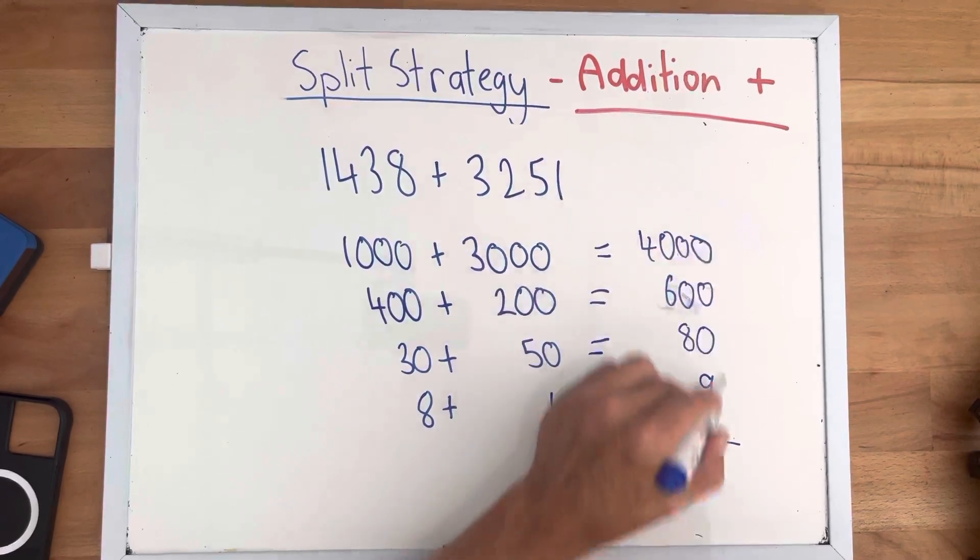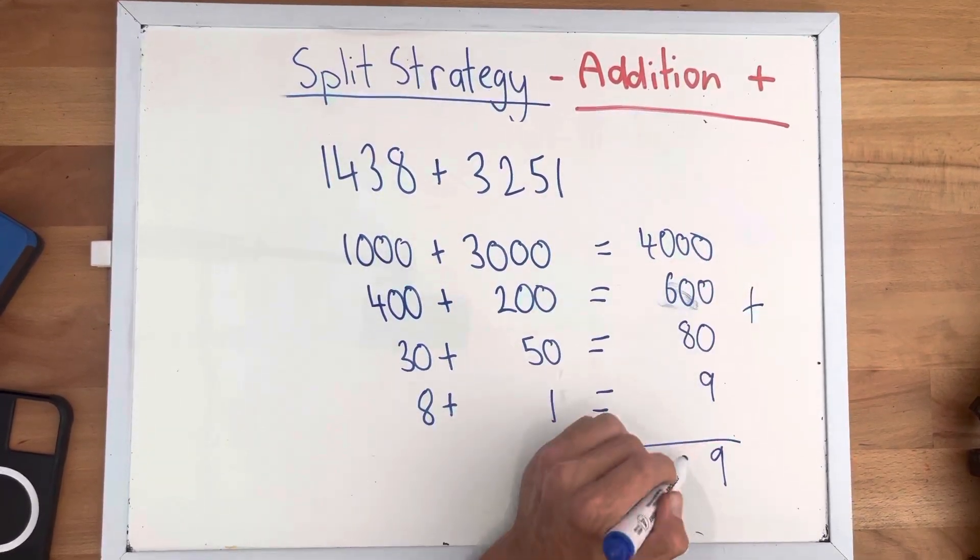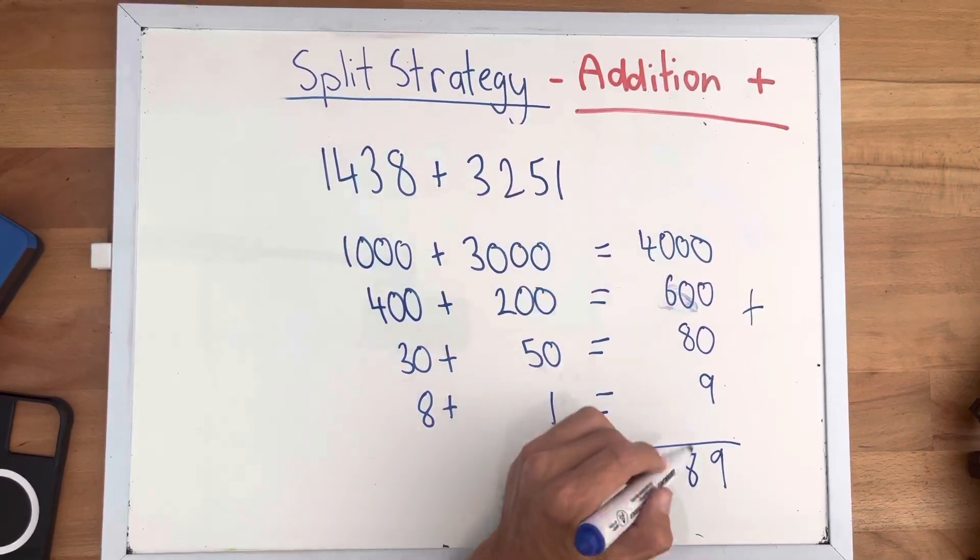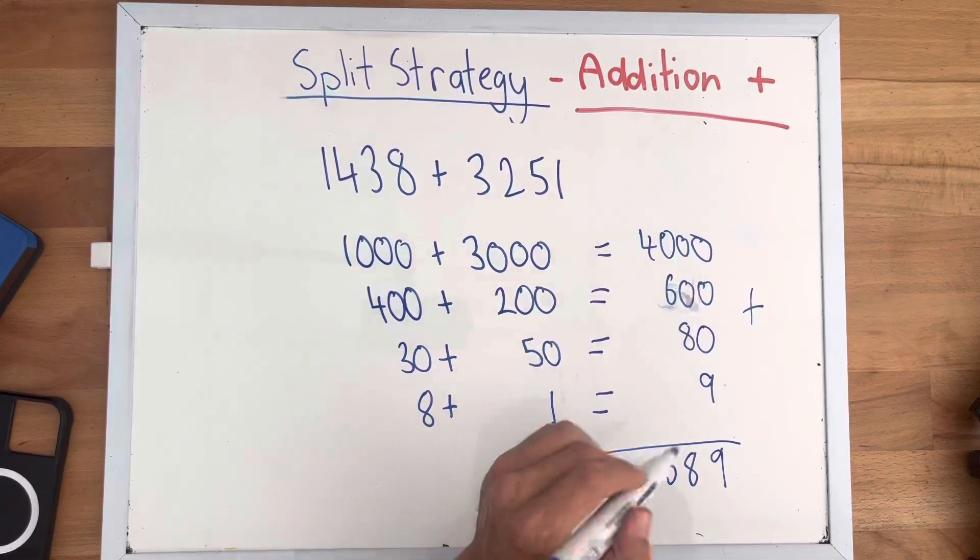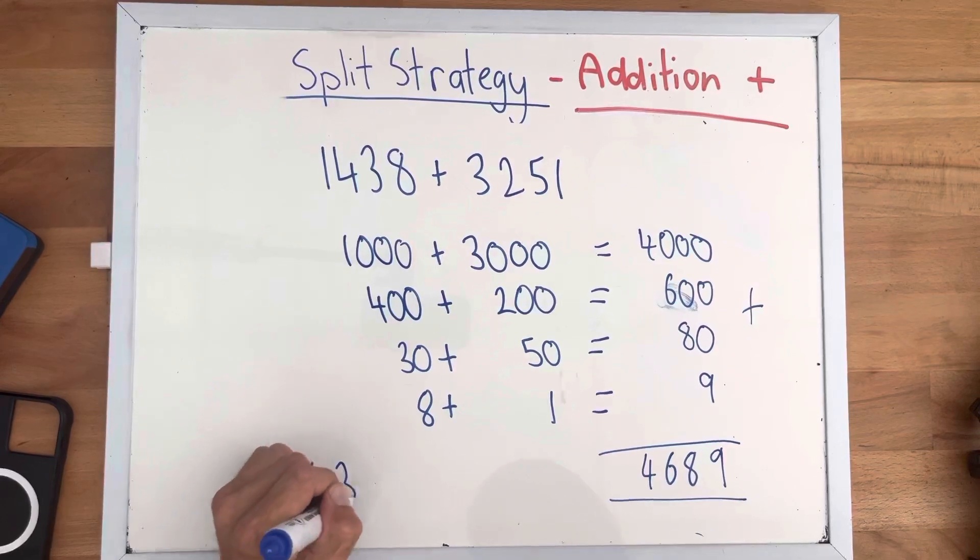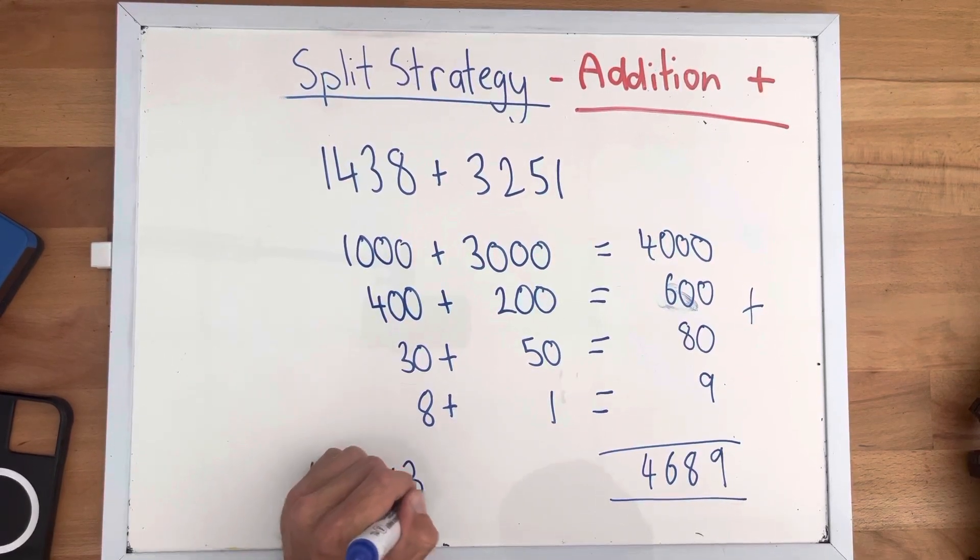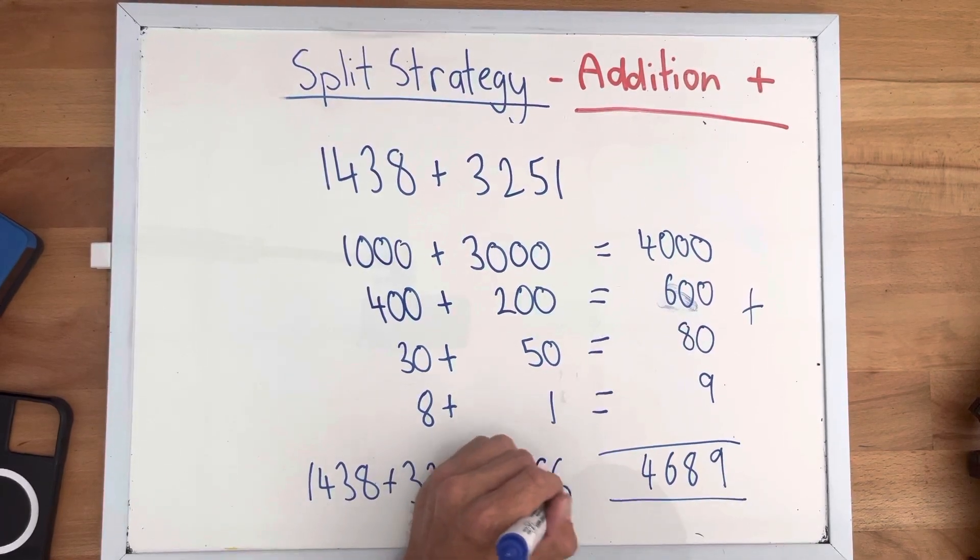So add our ones together, equal 9. Add our tens together, equal 8. Add our hundreds, which equals 6. And our thousands, which equals 4. So 1,438 plus 3,251 equals 4,689.